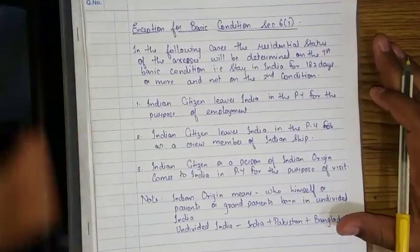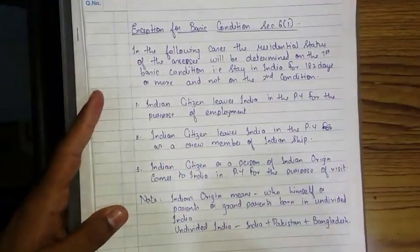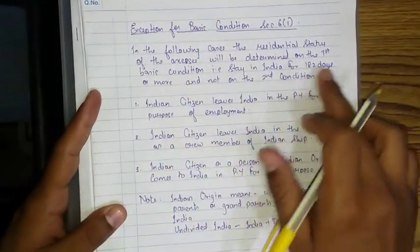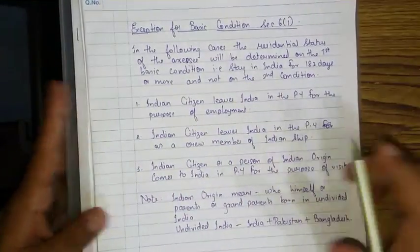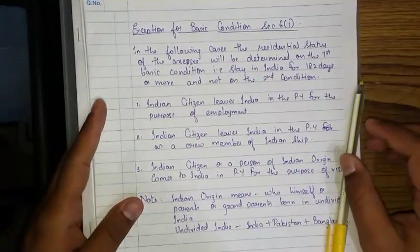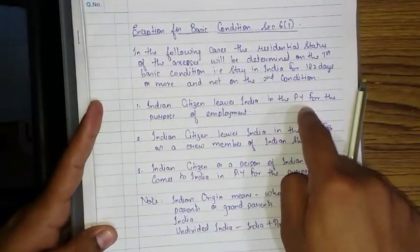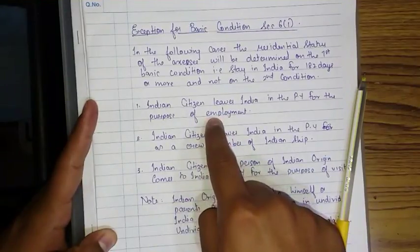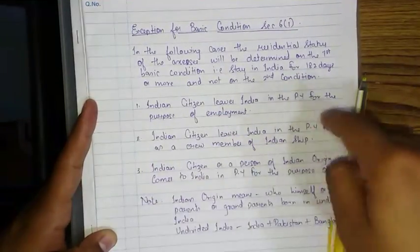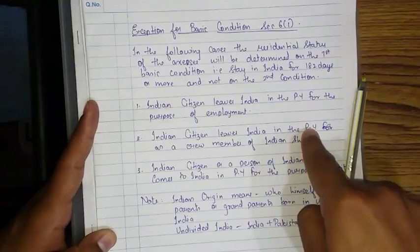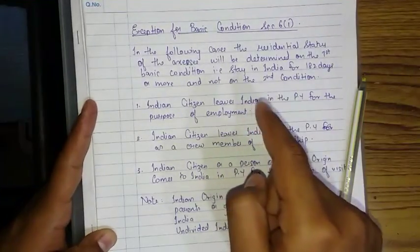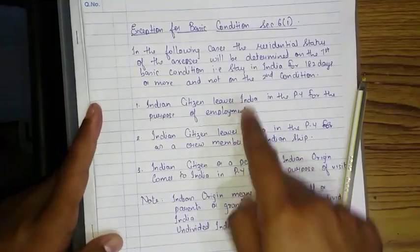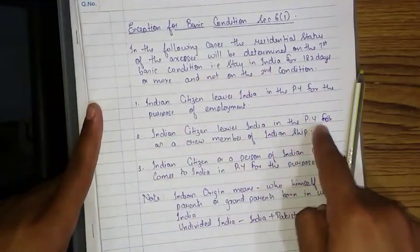Now we'll do a detailed study on these exceptions to the basic condition under Section 6, subsection 1. In the following cases, the residential status of the assessee will be determined on the first basic condition — stay in India for 182 days or more. So if an Indian citizen leaves India in the previous year for the purpose of employment and stayed in India for 182 days before leaving, then he is a resident.